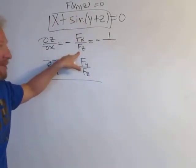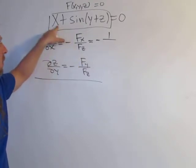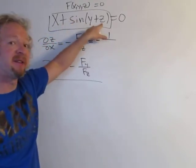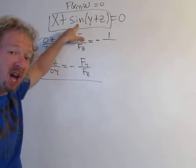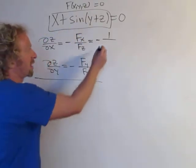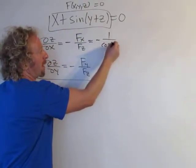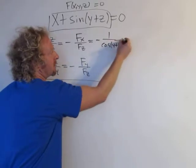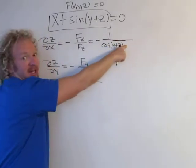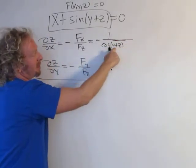Now we're taking the partial with respect to z. This derivative is zero. Here we have a z inside the sine function, so the derivative of sine is cosine. We have cosine of (y + z) times the derivative of the inside. The inside function is y + z.